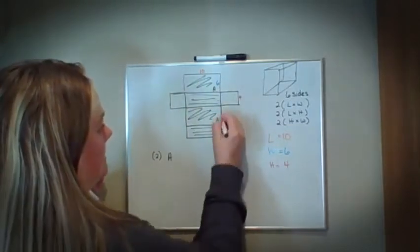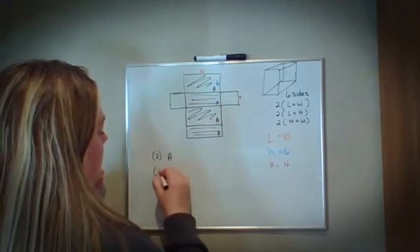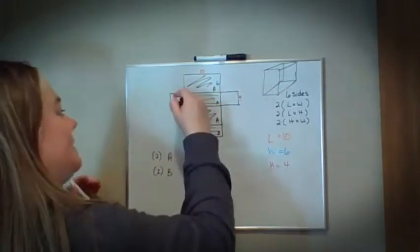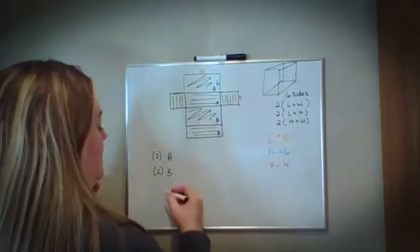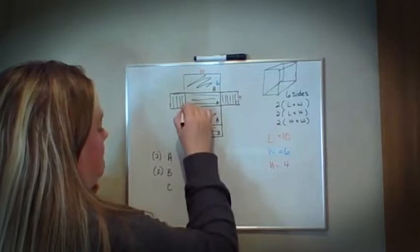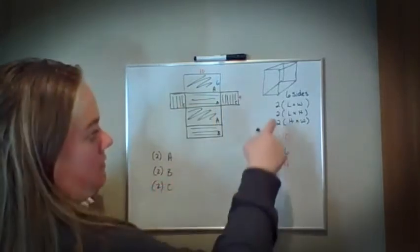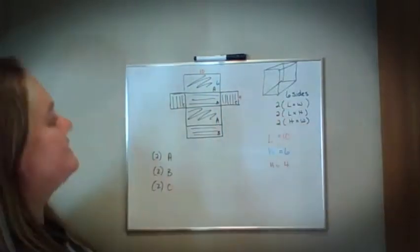Remember there's two of them. And then the last, this side and this side are going to be the same. Those are sides C, and there's two of them. Remember, I have two over here. There's a reason for it.